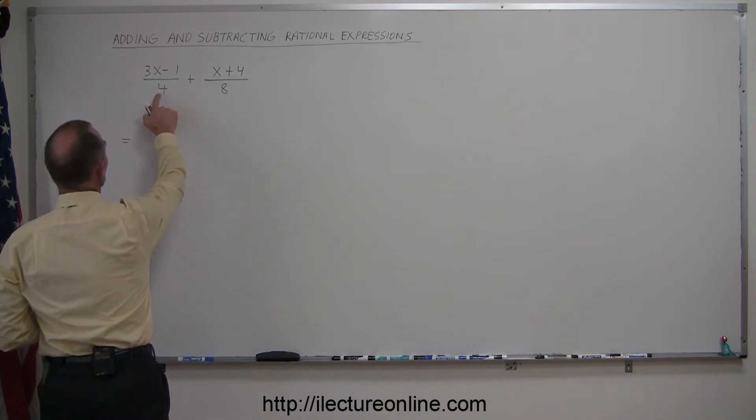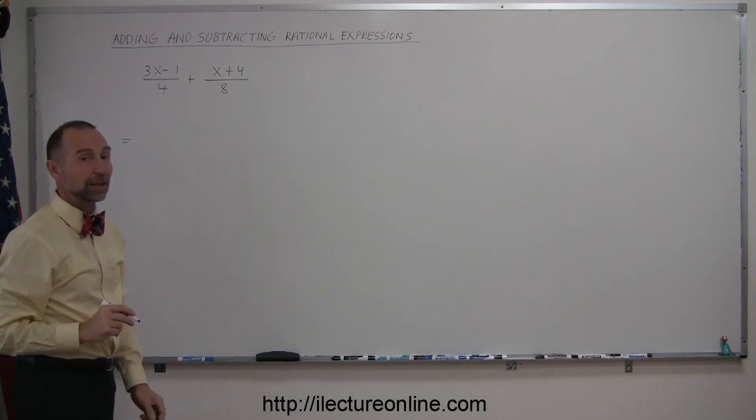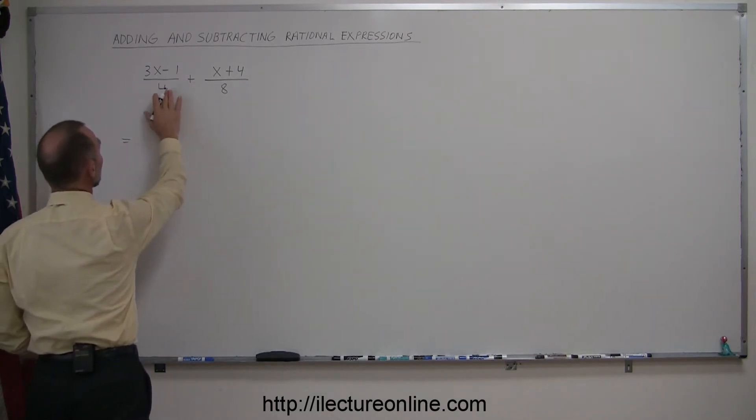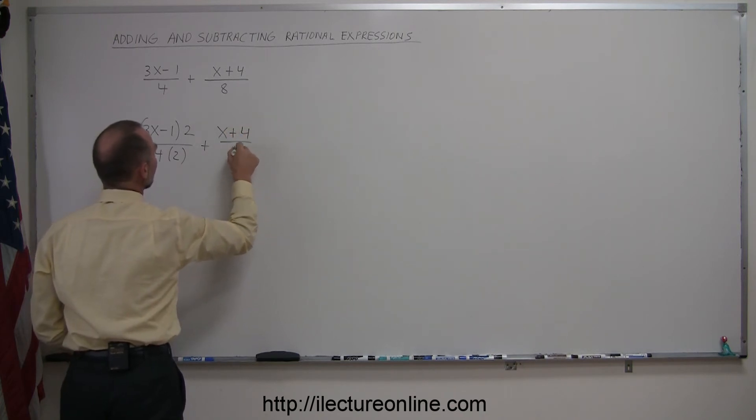In order to make the denominator on the left the same as the one on the right, we know we have to multiply that times two. And if you do that to the denominator, you must do the same to the numerator. So this becomes three x minus one multiplied times two, divided by four multiplied times two, and that we add to what we have on the right side, x plus four over eight.